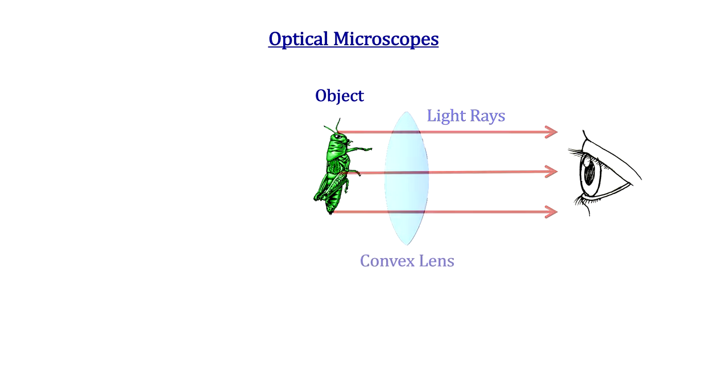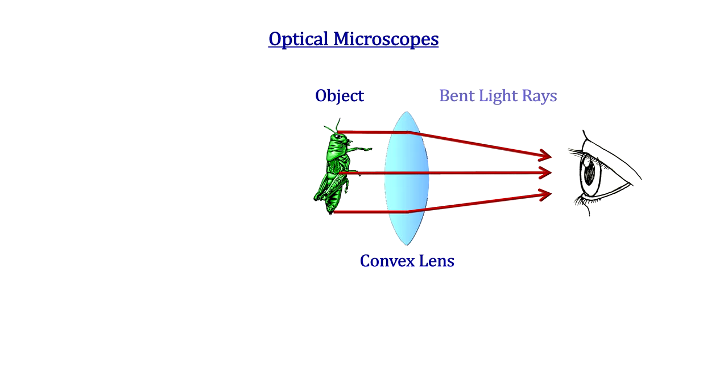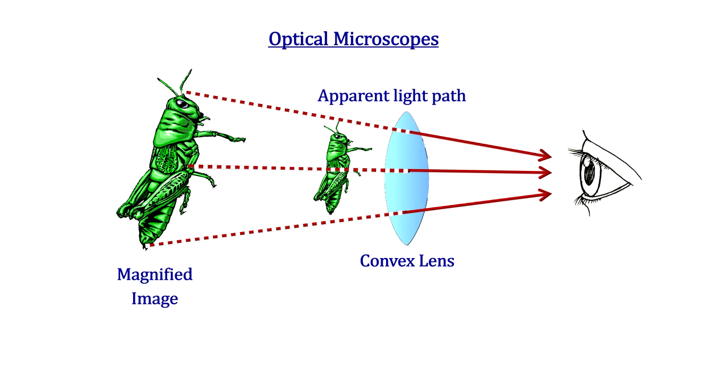Magnifying tools use lens combinations to bend light at an angle to increase the size of the image that's sent to the eye. The eye traces the light rays back to a virtual image larger than the actual object. The more we bend the light, the larger the image appears.